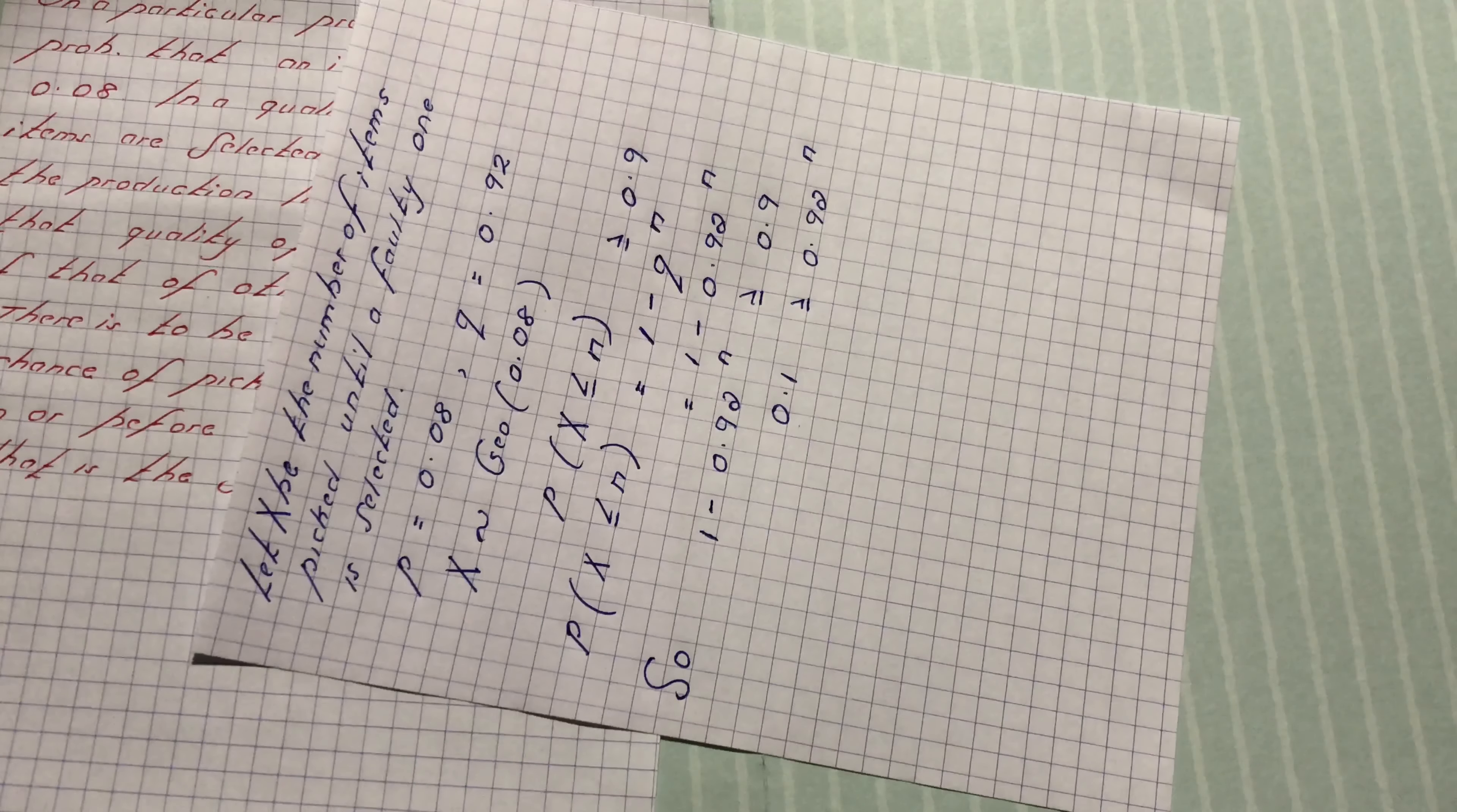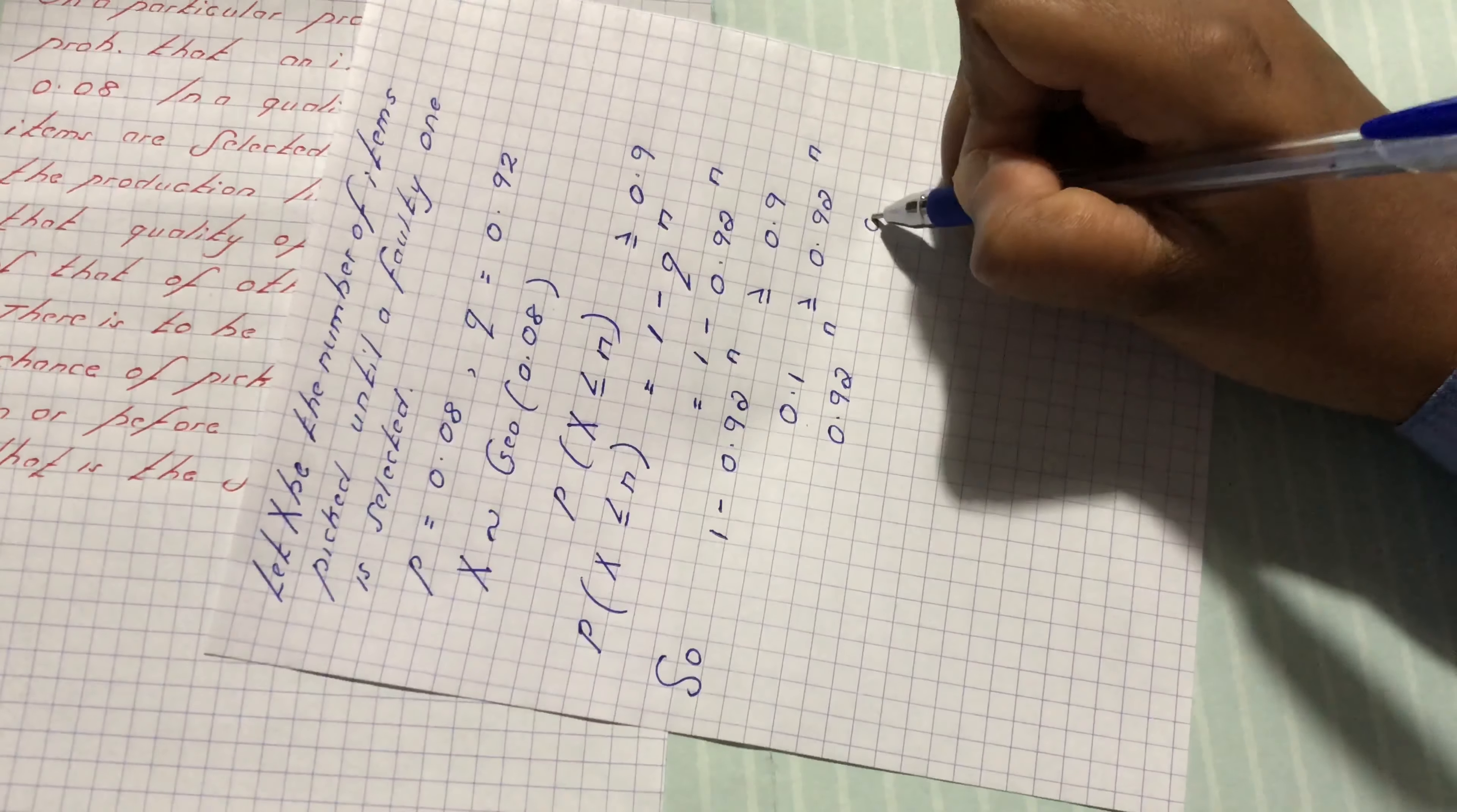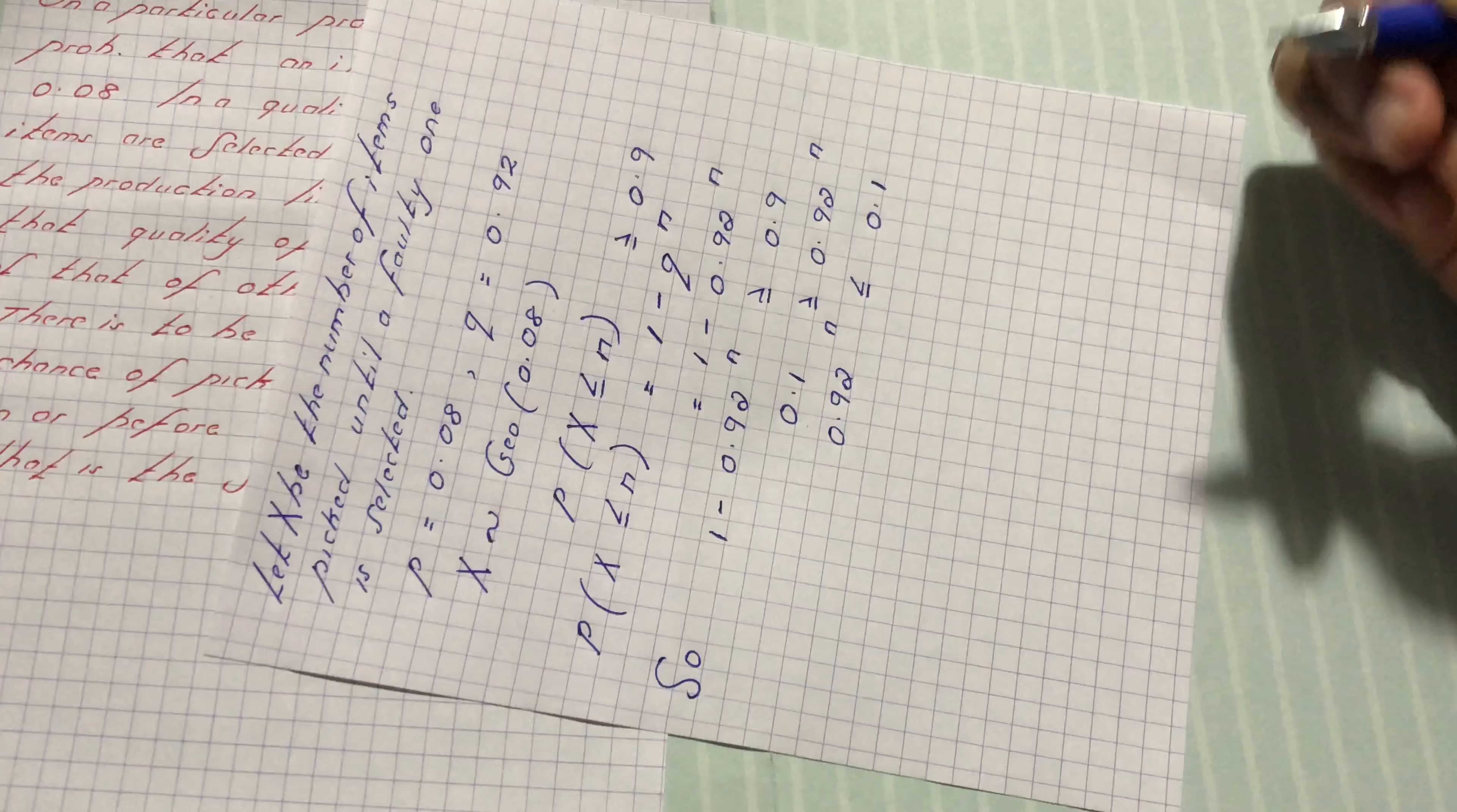We need to make n subject of formula. We have 0.92 and 0.1, the inequality sign changes to less or equal to.